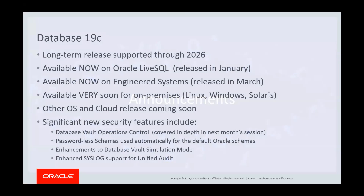For announcements, the big one is we're still in the rollout for Oracle Database 19c. This is our long-term release, supported through 2026, so if you're on 11g or 12c, this is probably the release you'll be upgrading to at some point. Database 19c is available now on Exadata and Engineered Systems, and will be available very soon on Linux, Windows, and Solaris. Keep an eye on edelivery.oracle.com. Other operating systems and cloud releases are coming shortly after.